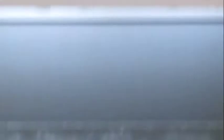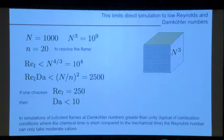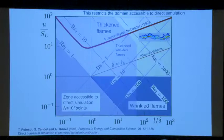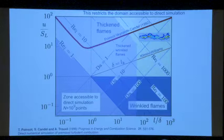N equals 1,000 gives you 10 to the 9 points. In this case I took N equal to 20 to resolve the flame. The Reynolds number is below 10 to the 4, and this quantity should be below 2,500. For example, you can use a Reynolds number of 250 — much lower than what you could do without combustion — and the Damköhler should be below 10. That translates into a regime diagram where you find the regimes. What happens is you cannot reach certain regions because the Reynolds number will be too high. This is the Borghi diagram — a regime diagram for premixed turbulent combustion.